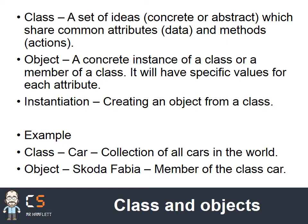Let's look at some of the key ideas. There aren't a huge number, but they are very important. There are two keywords you need to know straight away. The first is 'class'. A class is a set of ideas which can be concrete - like car or chair - or abstract, such as a structure. These ideas share common attributes or data that describe it. For example, a car would have the make of the car, the colour, and so on, and the methods or actions that they can perform - such as steer, brake, and so on.